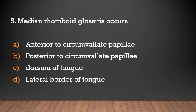Median rhomboid glossitis occurs anterior to the circumvallate papillae — not posterior to the circumvallate papillae, not the dorsum of the tongue, and not the lateral part of the tongue. Median rhomboid glossitis occurs anterior to the circumvallate papillae.